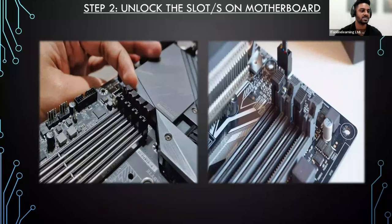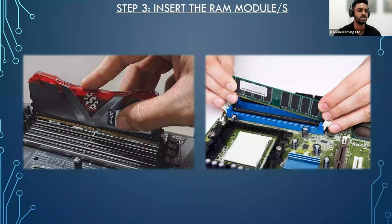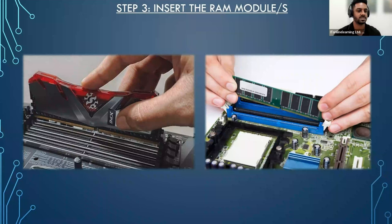You're just pushing the clip back to unlock the slot. The next step is to insert the RAM module. Remove the RAM from its packaging. If your RAM has exposed circuitry — the green part — only hold it by the edges and don't touch the side where the circuitry is. Also avoid touching the connector or pins at the bottom of the module. If your RAM is covered and has no exposed circuitry, it's fine to hold it on the sides.